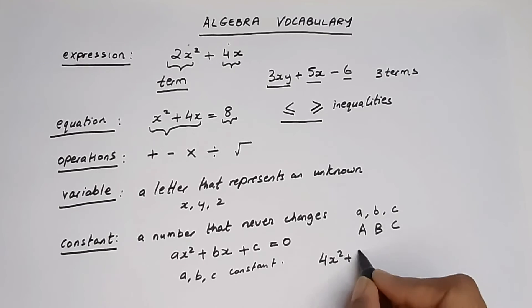4x squared plus 3x plus 7 is equal to 0. The constants here are 4, 3, and 7. These will never change. The value of x may change while solving, but these constants will not change. So this is the basic difference between constants and variables.